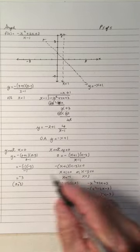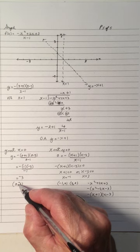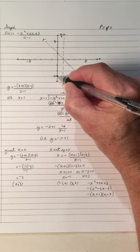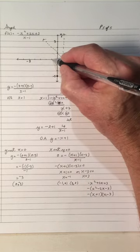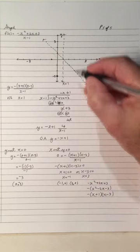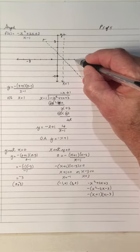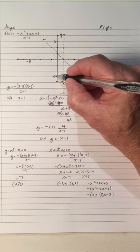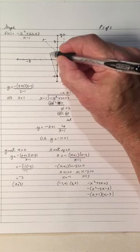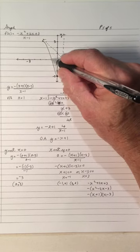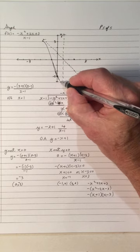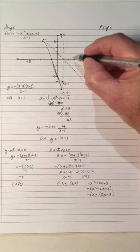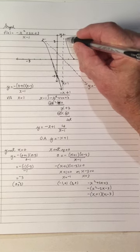Let's plot those intercepts. We have (0, negative 3) — x is 0, y is negative 3, right there. We have (negative 1, 0) — x is negative 1, y is 0, right there. And we have (3, 0) — x is 3, y is 0, right here. It looks like the graph is going towards the vertical asymptote, cutting through these two x-intercepts. It's coming up here and going along. As it goes down the vertical asymptote comes down alongside.